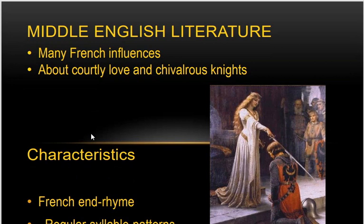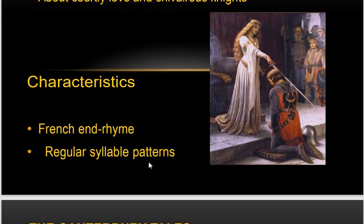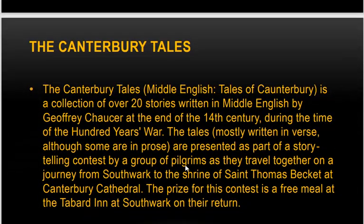Many French influences entered England during the 300 years of Norman or French conquest. Literature came to be about courtly and chivalrous knights, the adventures of knights, and love stories. The characteristics of Middle English literature include French-influenced rhyme and regular syllable patterns. We will later study the Canterbury Tales, which came after Beowulf — but not in this first week.